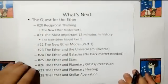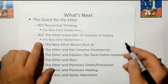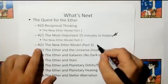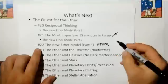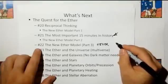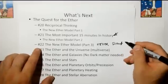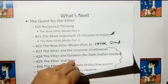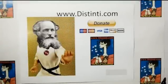What's next? Video number 20 will start the new aether model with reciprocal thinking. You do not want to miss video number 21 — we're going to complete the aether drag. There is aether drag, but it's not the aether drag they discuss, because the aether drag they discuss is ridiculous. And then we're going to go into Distinti's universe. Thank you for watching, and have a nice day.